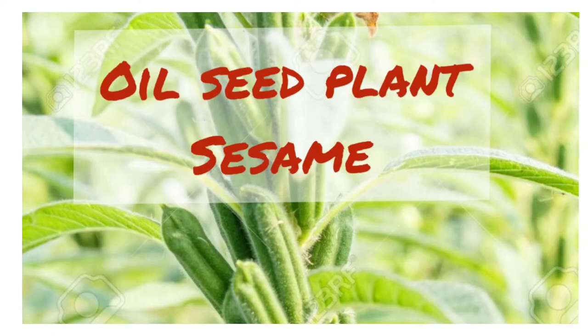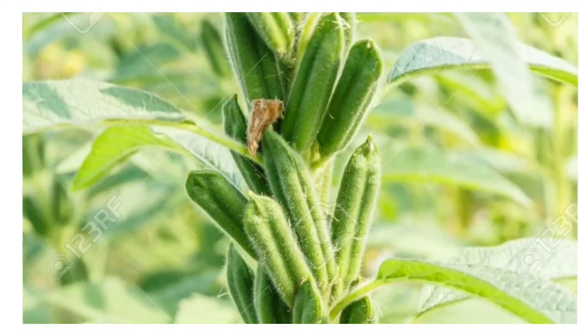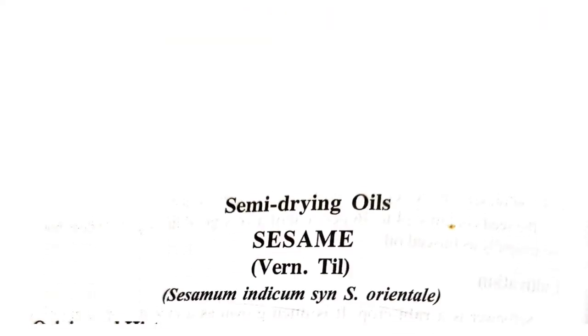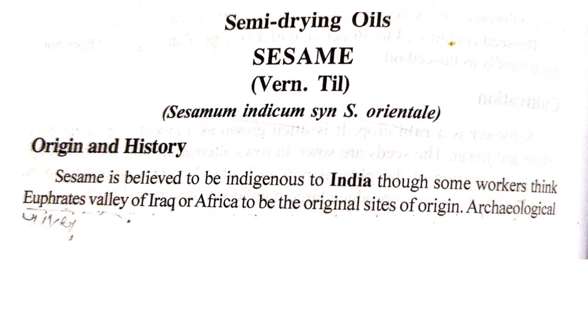Hello everyone, good morning. This is Kiran Bakatra. Welcome to our next lecture. In our previous lecture we discussed about the oilseed plant groundnut, known as Arachis hypogaea, belonging to the Fabaceae family, covering origin, history, cultivation, harvesting, ecological factors, botanical features, and uses. Today we discuss the second oilseed plant — the sesame plant. Sesame is a semi-drying oil, commonly known by the vernacular name 'til.' The scientific name is Sesamum indicum, where Sesamum is the genus and indicum is the species.